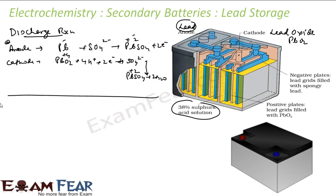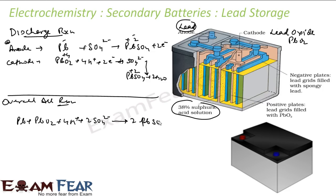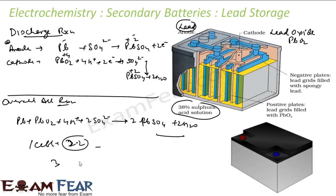The overall discharge reaction is: Pb + PbO₂ + 4H⁺ + 2SO₄²⁻ → 2PbSO₄ + 2H₂O. Each cell provides 2.2 volts. Batteries are typically configured with 3 cells (approximately 6 volts) or 6 cells (approximately 12 volts) connected in series.